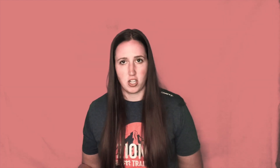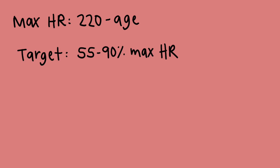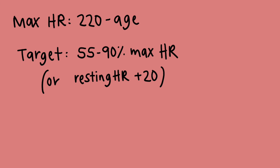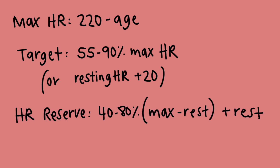Back to heart rate — it's the easiest way to figure out your exercise intensity. You can calculate your maximum heart rate by taking 220 minus your age in years. You can calculate your target heart rate by taking anywhere from 55 to 90 percent of your max heart rate. You could do your resting heart rate plus 20, or you could use your heart rate reserve, which uses the Karvonen formula: 40 to 80 percent of your max heart rate minus your resting heart rate, then add your resting heart rate back in. The percentage you use will be based on your exercise goals, but most people have a watch or can track their heart rate easily now and can adjust their exercise to make sure they're in that target zone.